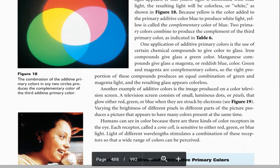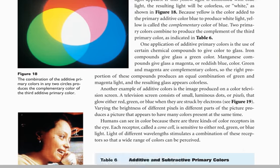Varying the brightness of different pixels in different parts of the picture produces a picture that appears to have many colors present at the same time.